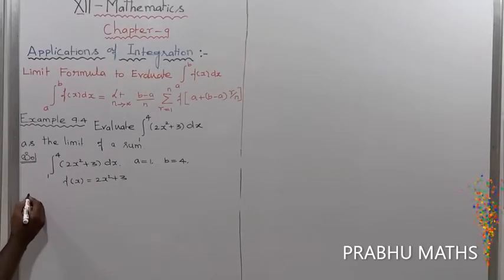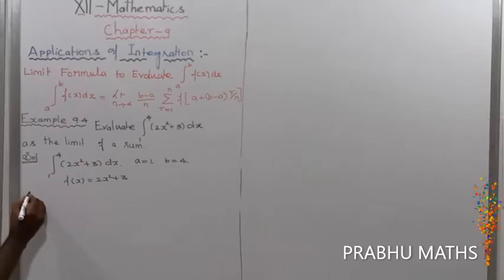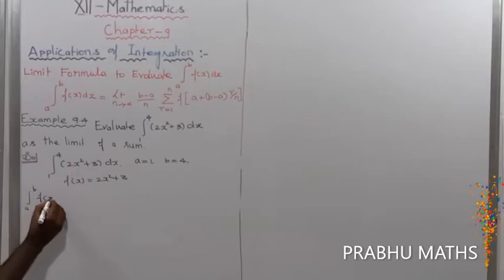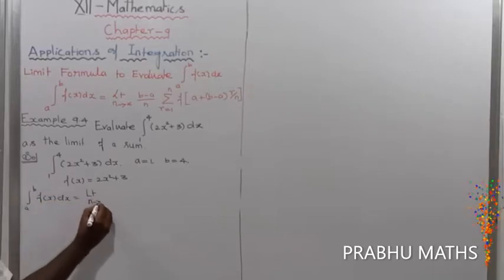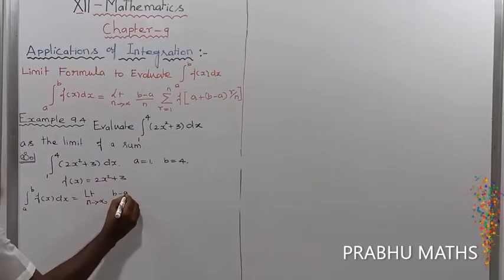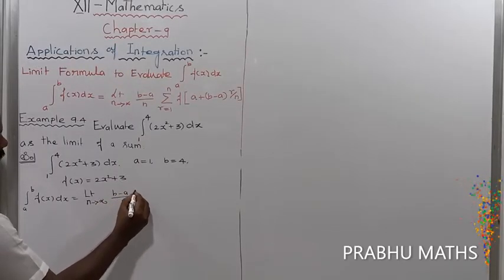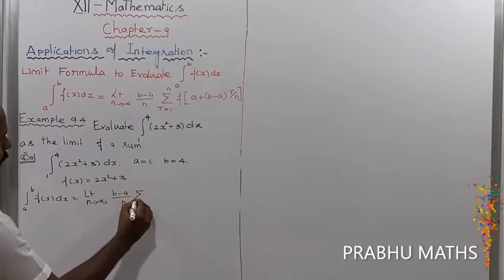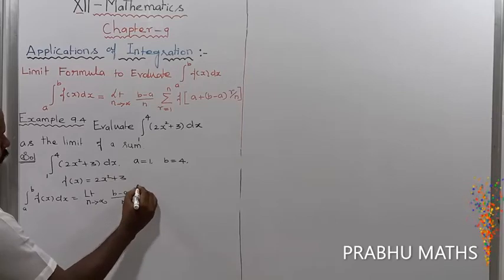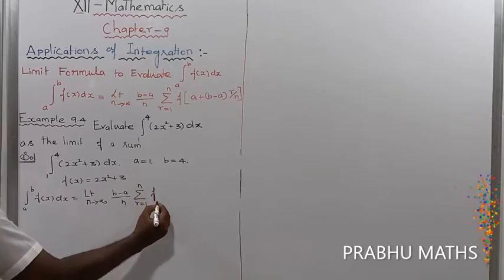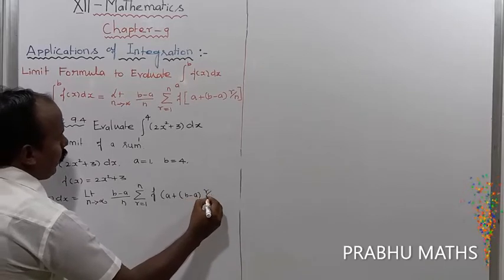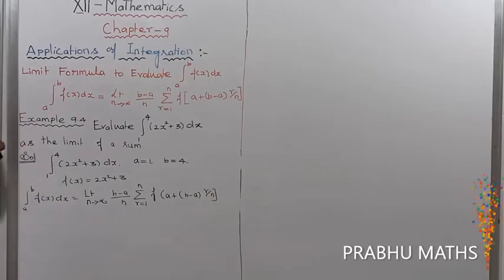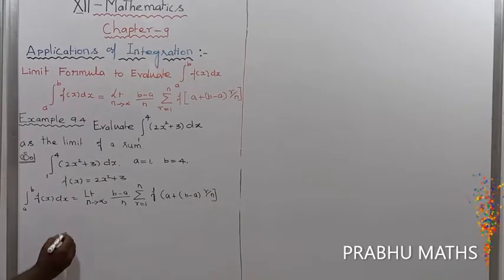The formula for the integral from a to b of f(x) dx is equal to the limit as n tends to infinity of (b minus a) divided by n, into the summation of r from 1 to n of f of a plus (b minus a) times r by n. That is the formula.